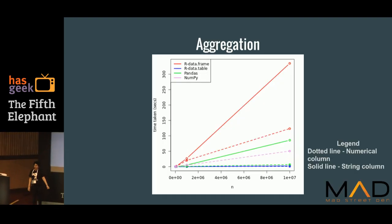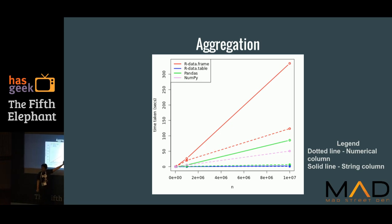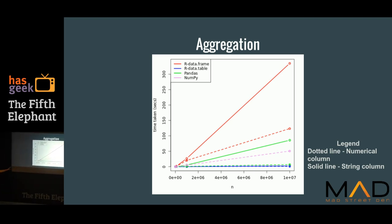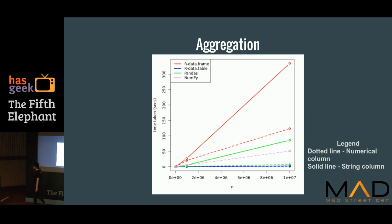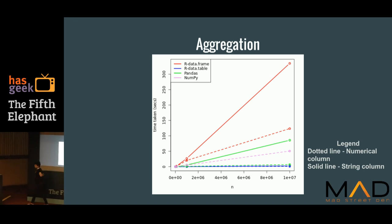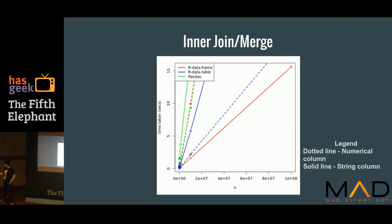Now we'll look at the group by operation. You can see there are two kinds of lines — the solid is the group by on a string column, and the dotted is the group by on a numerical column. Again, the blue line, data.table, is performing very well, followed by the green which is pandas. NumPy does not support group by SQL-like operations — so that pink line is ITA tools being benchmarked there. The data.frame is not doing so well.